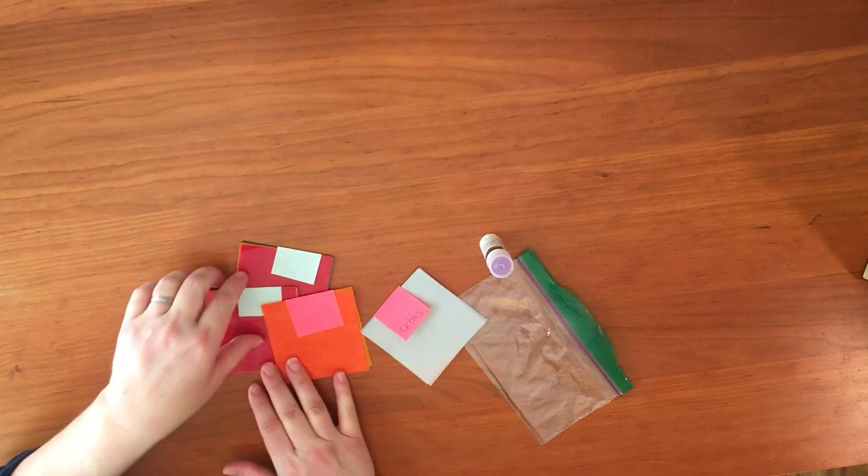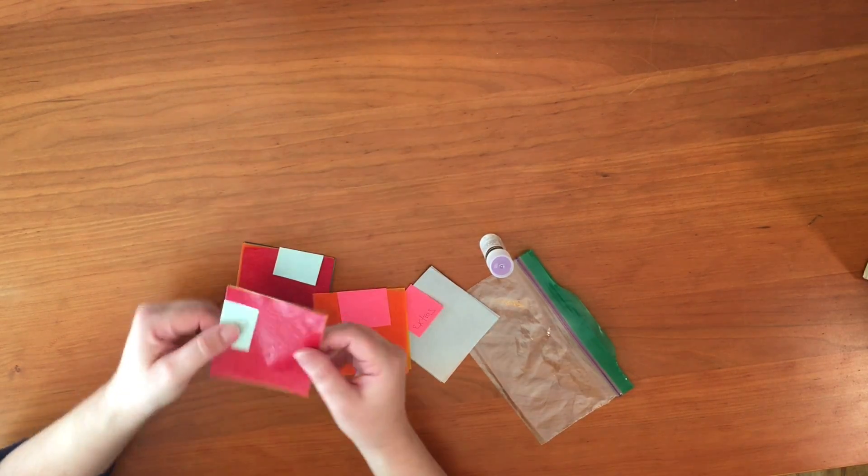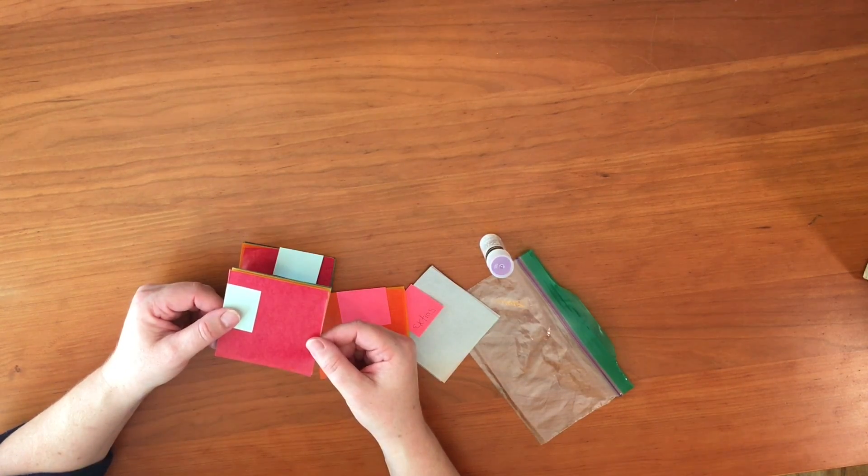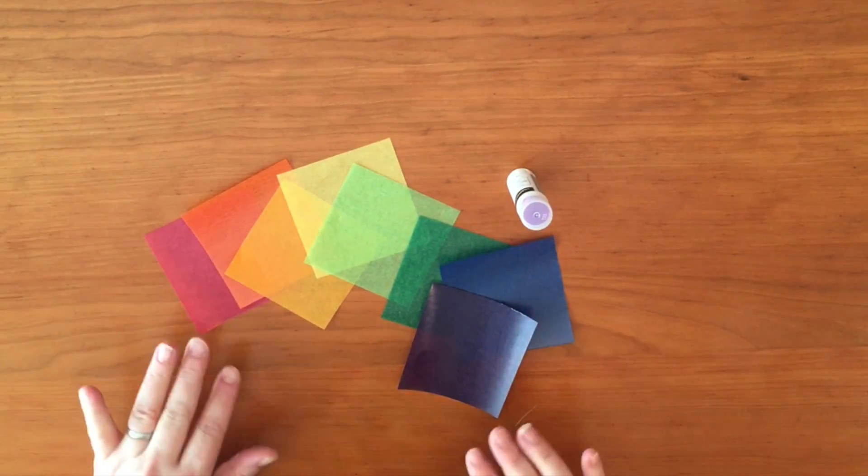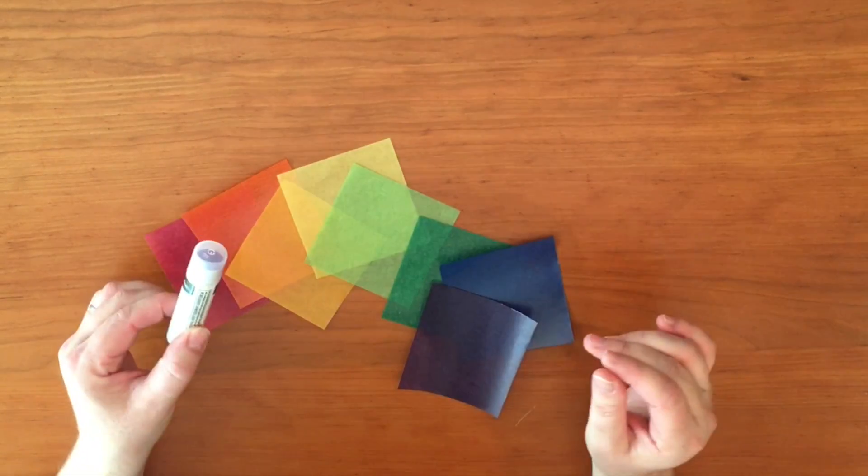The first star we're going to make is the basic eight pointed star and for that we're going to use a rainbow bundle. So the only materials you need are your eight pieces of kite paper and a glue stick.